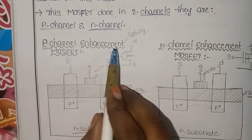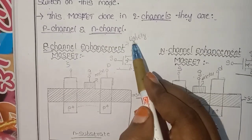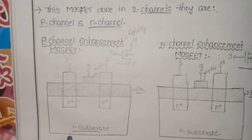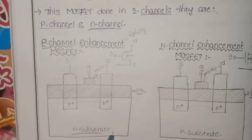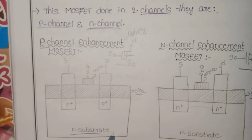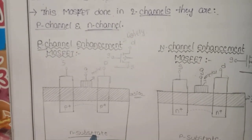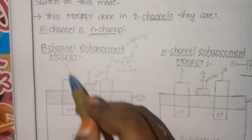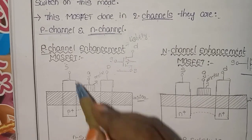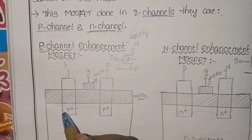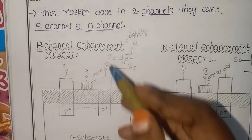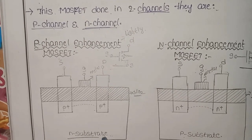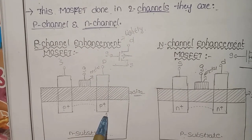P-channel enhancement MOSFET uses a lightly doped N-type substrate. Here there are two P-type regions. Source and drain terminals are doped into the N-substrate, lightly doped.